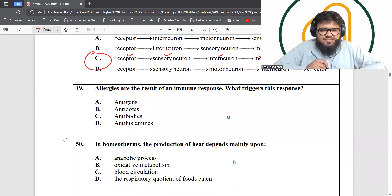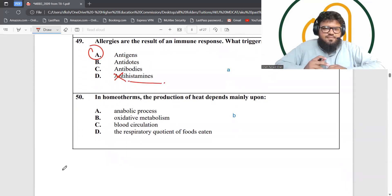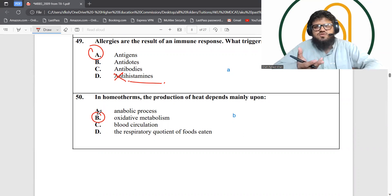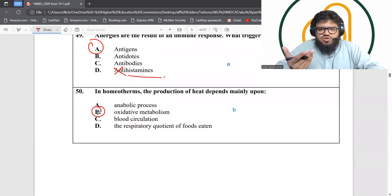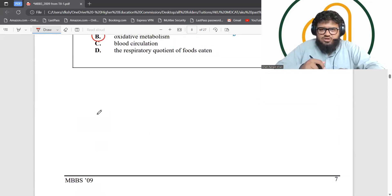Question 49: What triggers the immune response? It's actually the antigens. An allergy, by definition, is an inappropriate and excessive immune response to a specific antigen. Antihistamines is not the answer—it's histamines that do that. Question 50: In homeotherms, the production of heat depends mainly upon oxidative metabolism because oxidation and metabolism produce heat. Oxidative metabolism is actually respiration, oxidative phosphorylation. It produces a lot of heat, so homeotherms do depend on that. This finishes off our biology section.